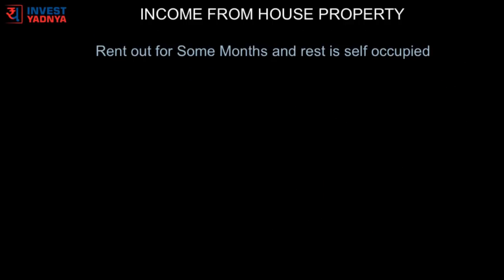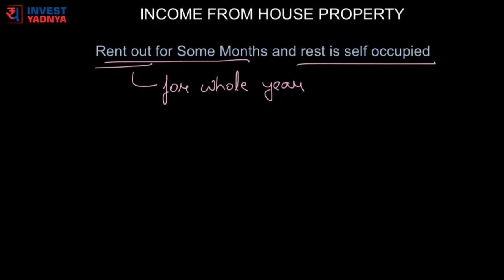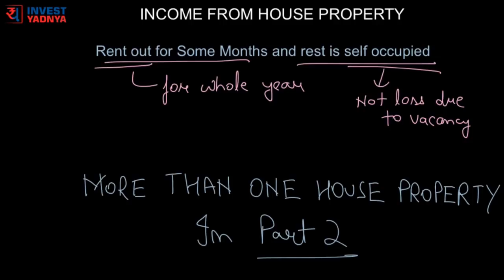The next scenario is what if a property is rented out for some months of the year and for the rest of the months it is self-occupied. In this case, income from house property will be calculated as if the property has been rented out for the whole year. Also remember, the time when the property was self-occupied will not be considered as a loss due to vacancy. There are a few more scenarios involving a person with more than one house property, which we will discuss in detail in Part 2 of this topic.